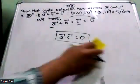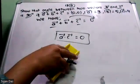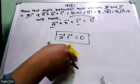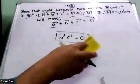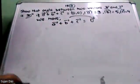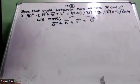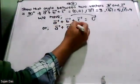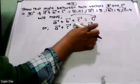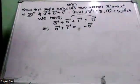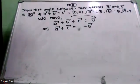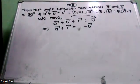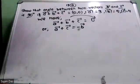So from the given condition, vector A plus vector B plus vector C = 0. We can write vector A plus vector C = minus vector B. So, vector A plus vector C equals negative vector B.